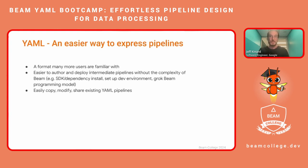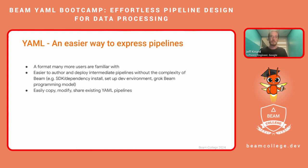That's where Beam YAML comes in. It's an easier way to express your pipelines. YAML is a format that many people are already familiar with, or if they're not, it's a simple one to learn. It makes it easier to author and deploy intermediate pipelines — something a little bit more complex than reading from a file and writing to another file, but maybe not as complex as some of the behemoths out there. It makes it easier because you don't need to install an SDK or a development environment. You don't really need to know all the nuances of the Beam programming model, although you do need to know some of the basics, like key transforms and how a pipeline is structured.